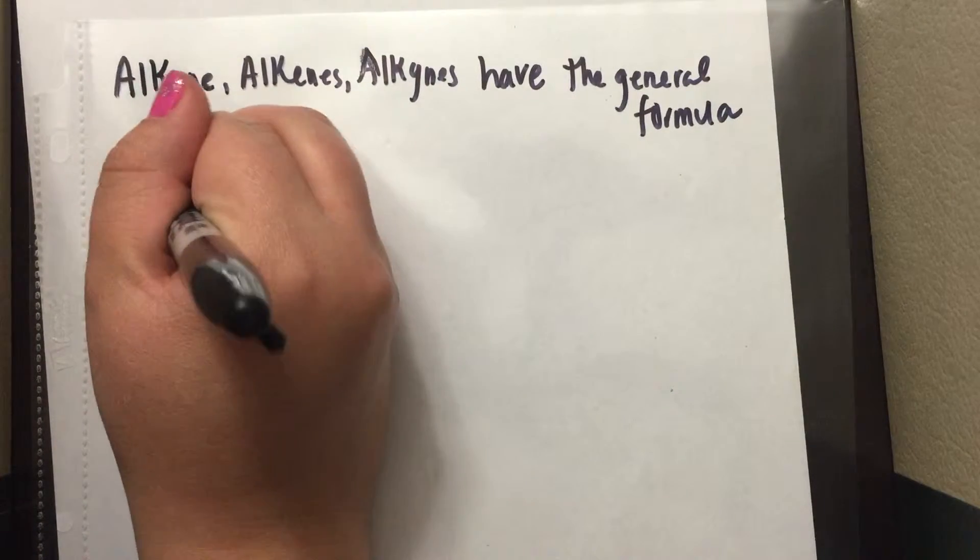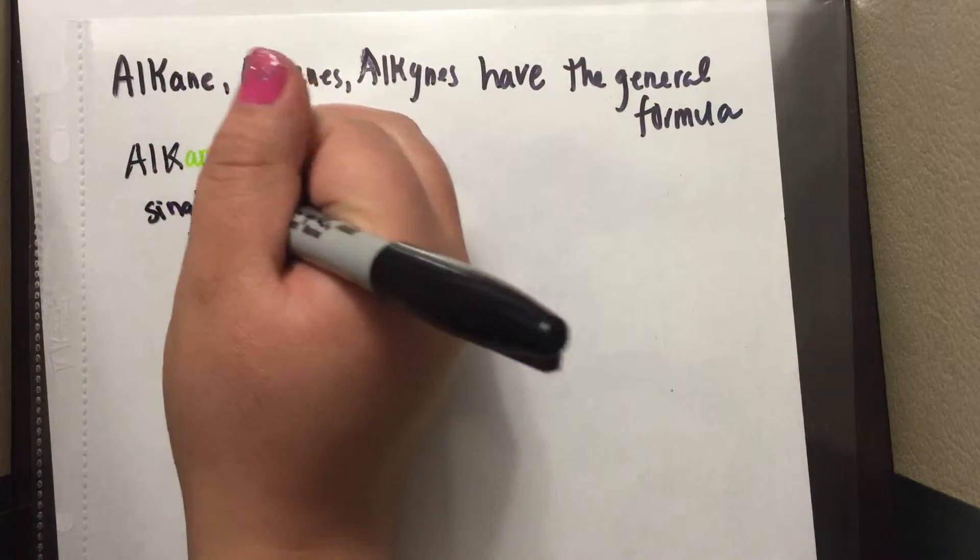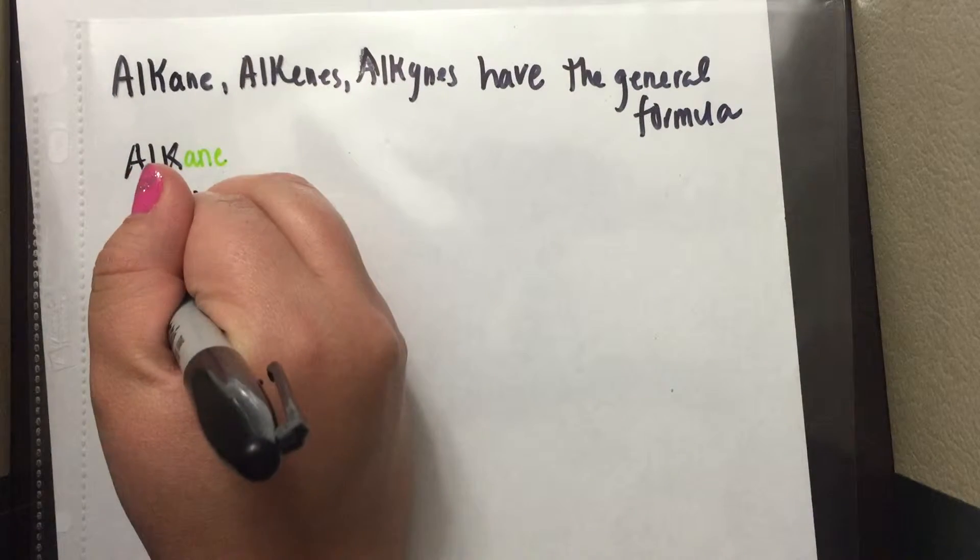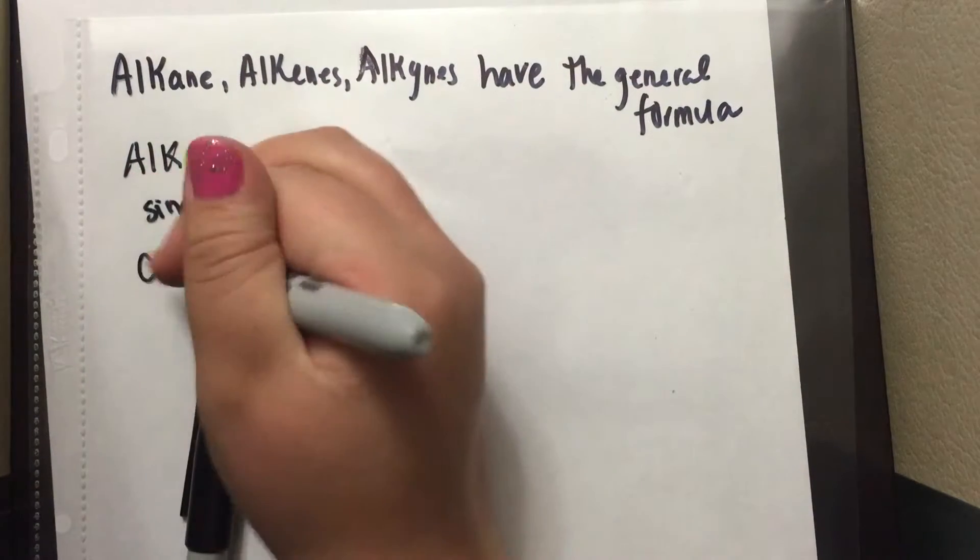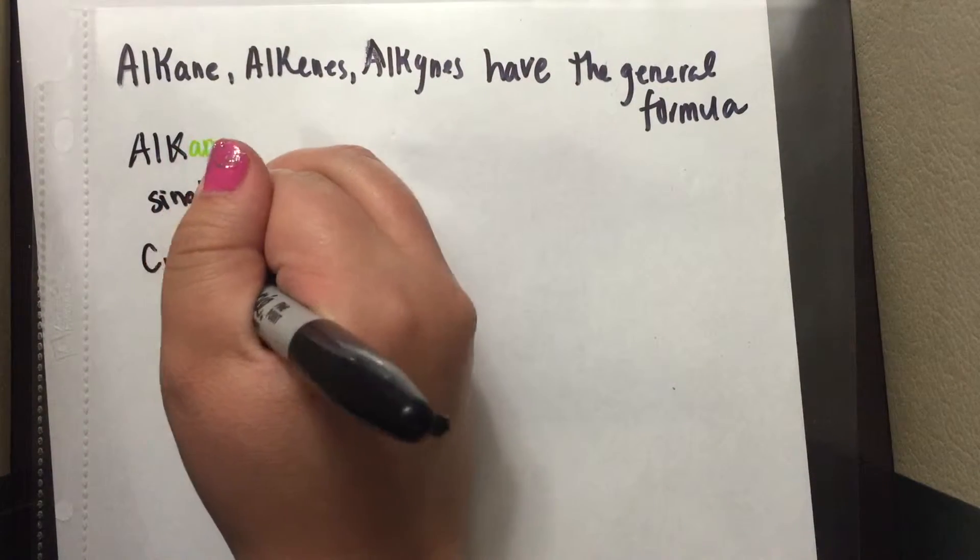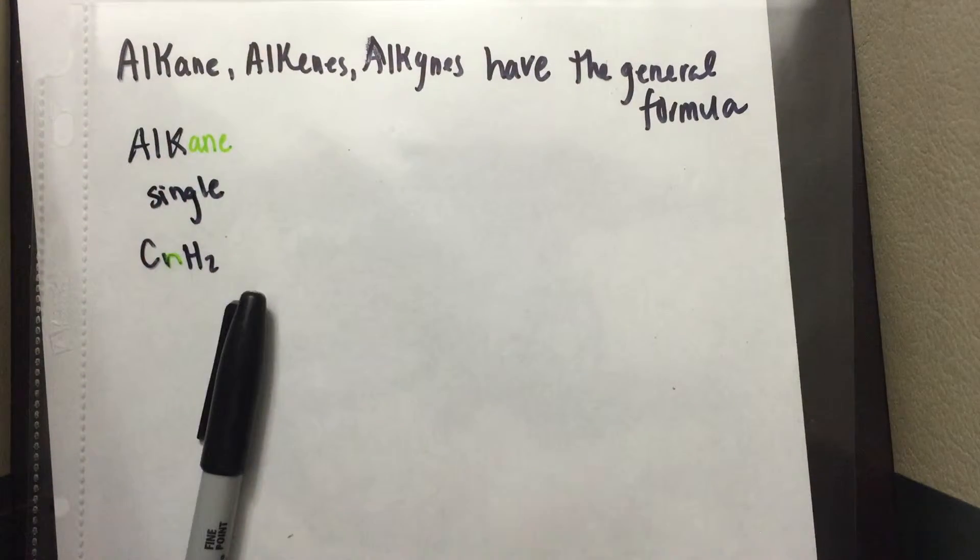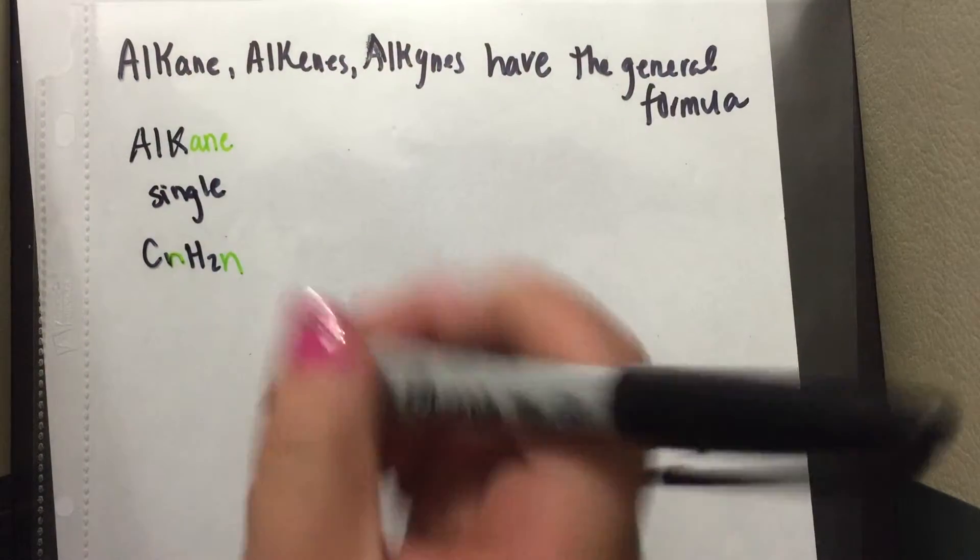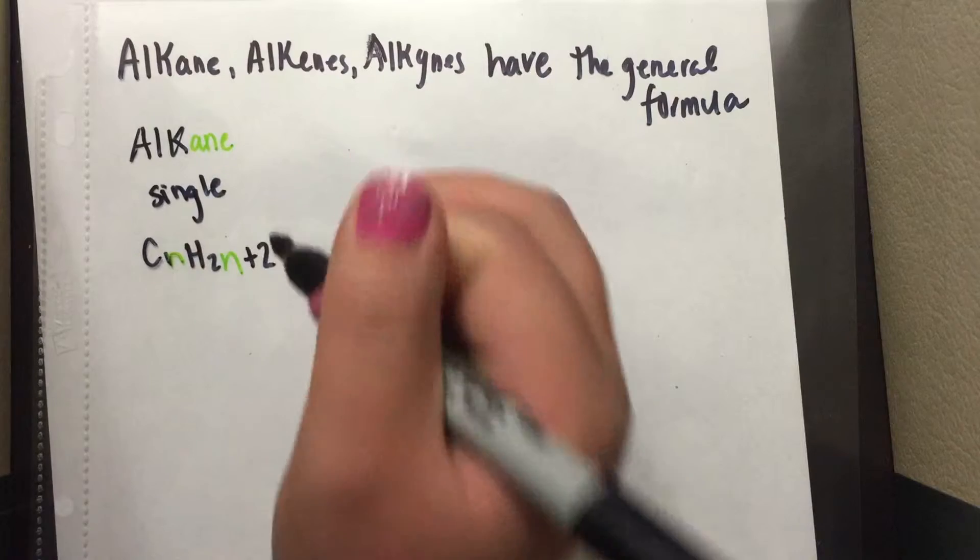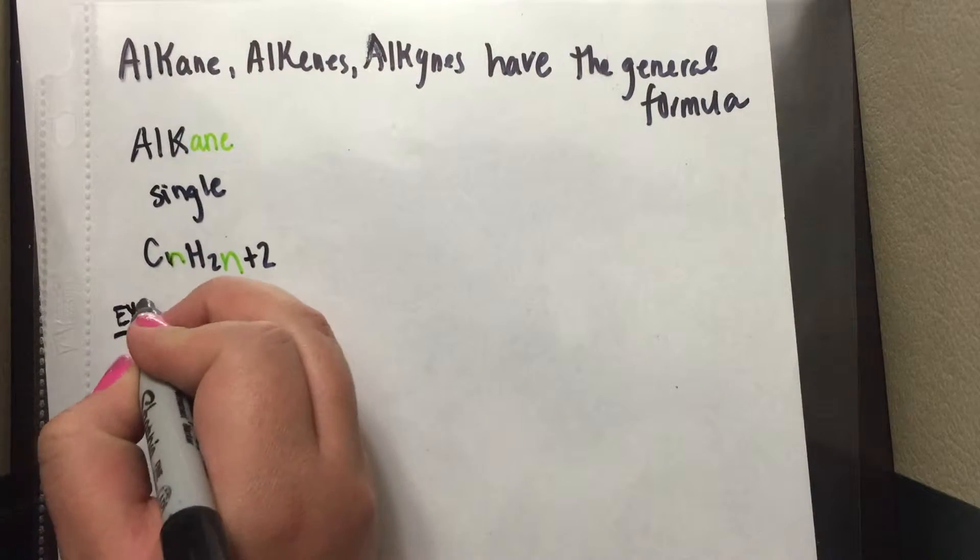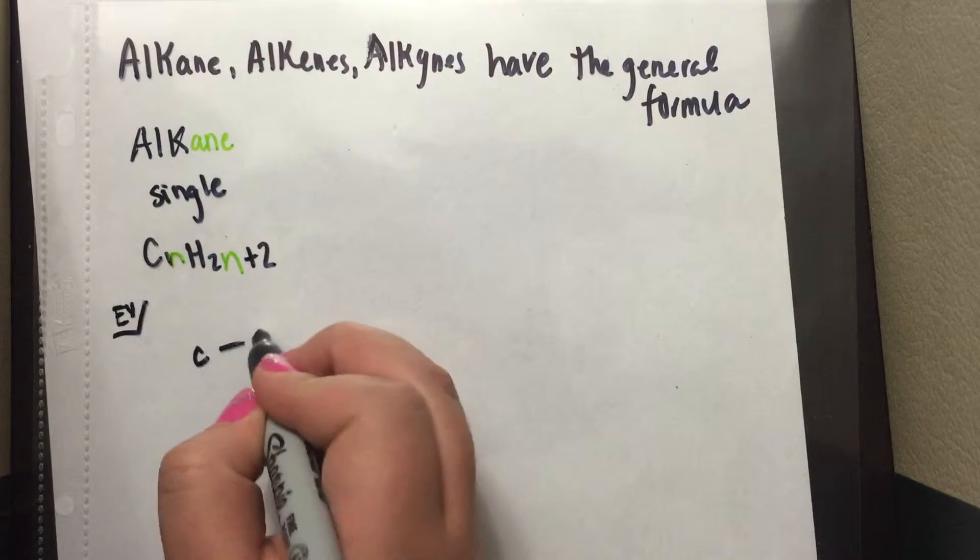The alkane ends with A and E. It is a single bond. The formula is CnH2 times n plus 2. An example of this would be CH4.